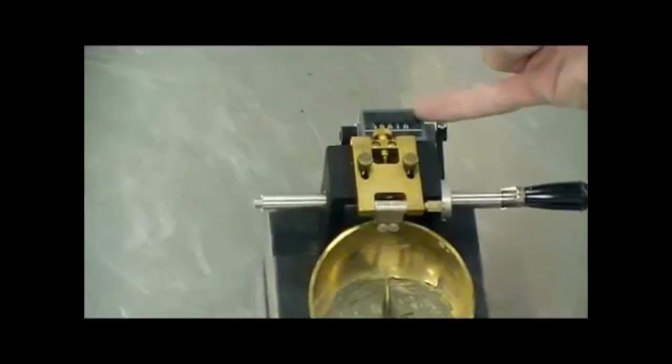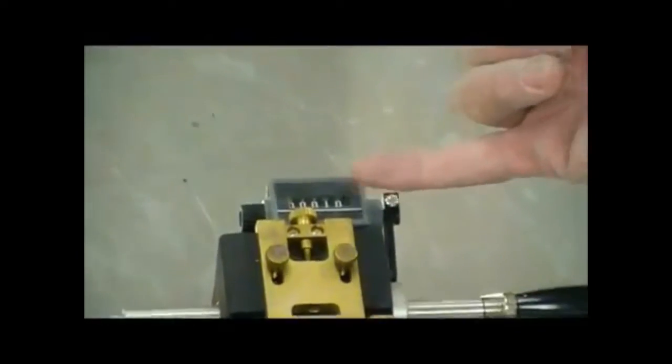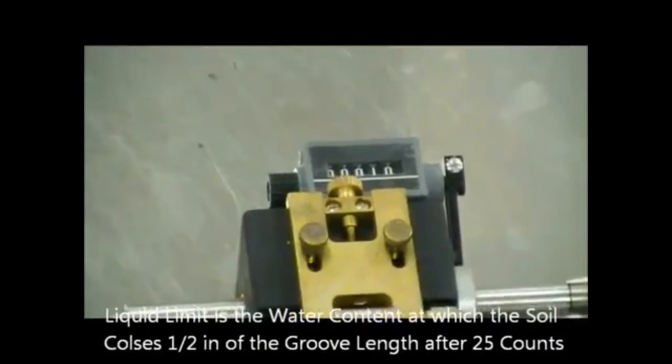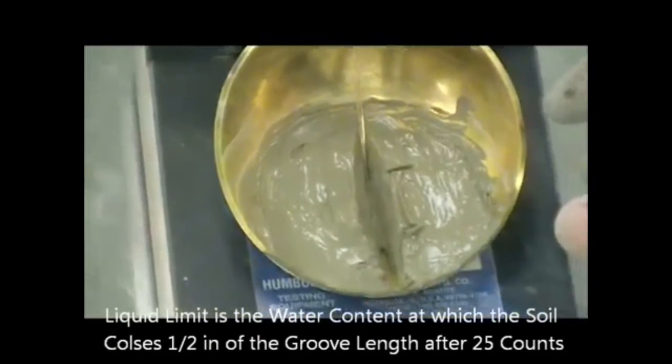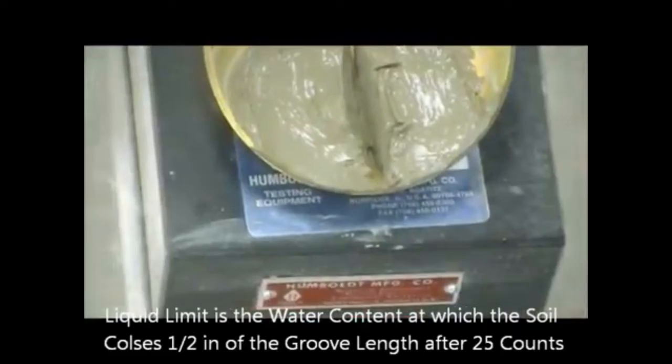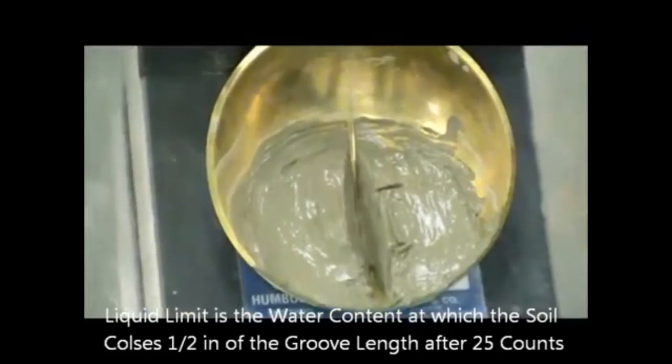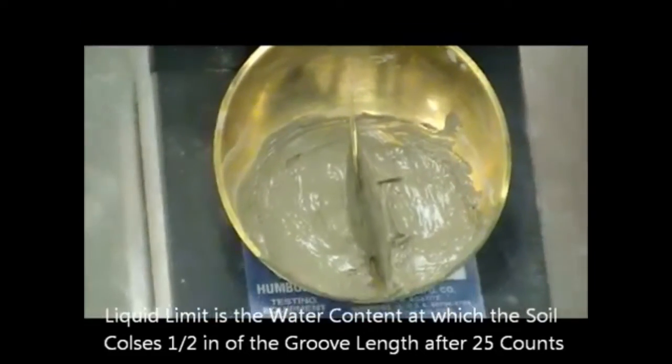The goal is to identify the water content for which it takes exactly 25 counts to close a gap by half an inch. Now because it's not possible to be exactly at 25, we're going to use this number at 10.